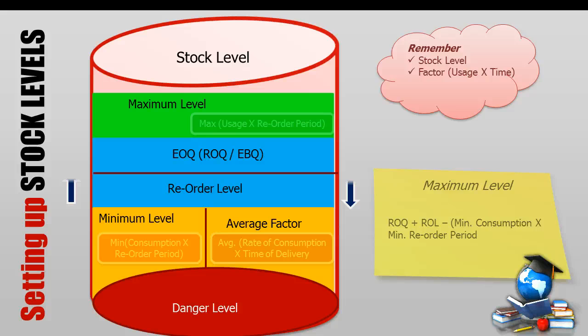Maximum level formula: reorder level plus economic ordering quantity minus minimum consumption into minimum reorder period. Very easy to find out, right?